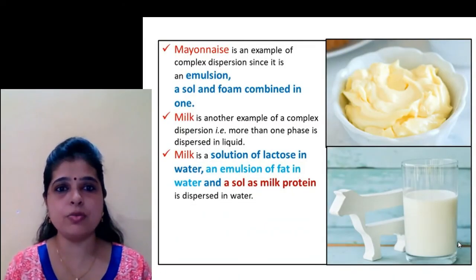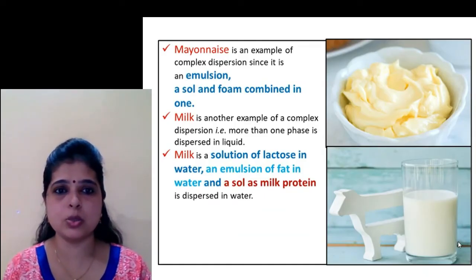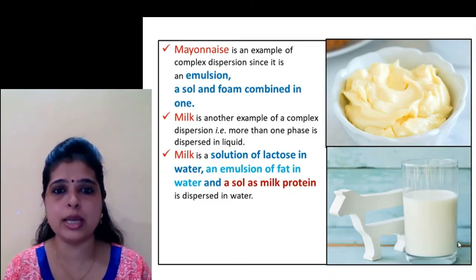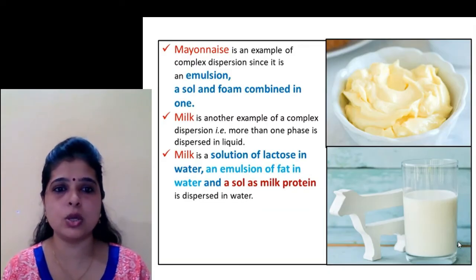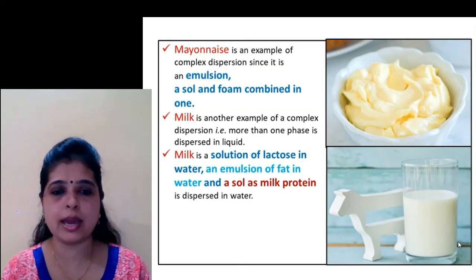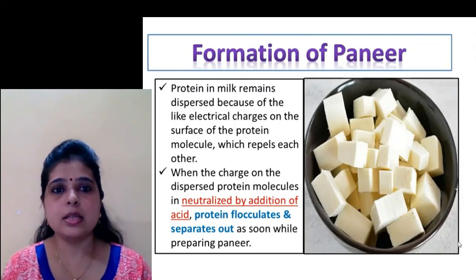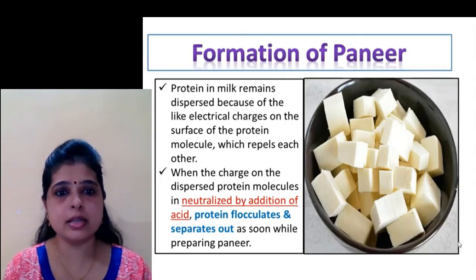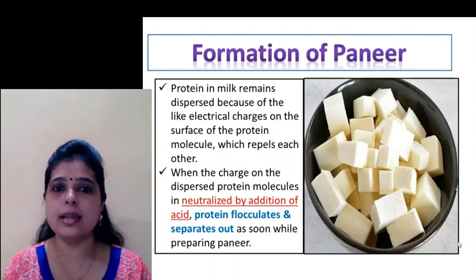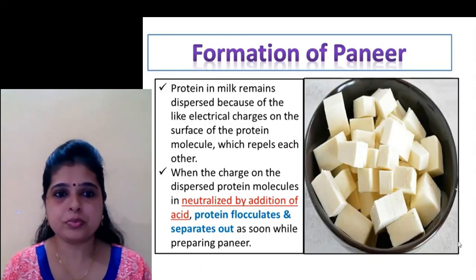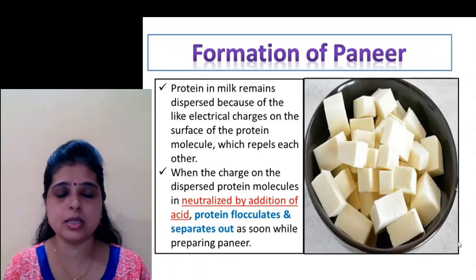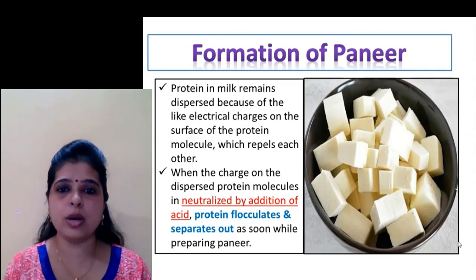Mayonnaise is also an example of complex dispersion because it is an emulsion, a sol, and a foam combined in one. Milk is also an example of complex dispersion because more than one phase is dispersed in liquid — milk is a solution of lactose in water, an emulsion of fat in water, and a sol as milk protein dispersed in water. Now, the formation of paneer: as I told earlier, protein as a colloidal system is present and they have electrical charges on the surface of the protein molecules. Like charges repel each other, so they are dispersed in the continuous phase of milk. When the charges on the dispersed protein molecules are neutralized by addition of acid, the protein flocculates and separates out as curd while preparing paneer.